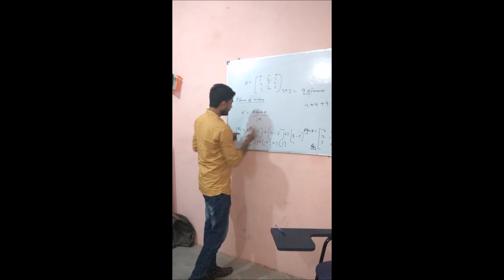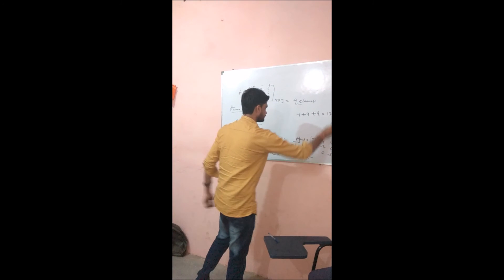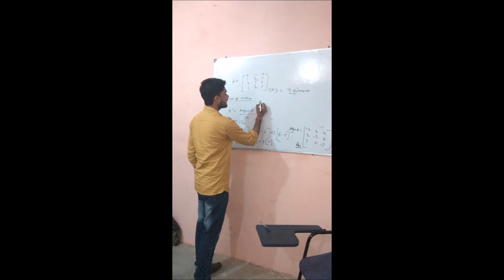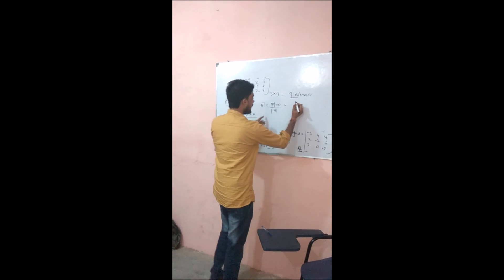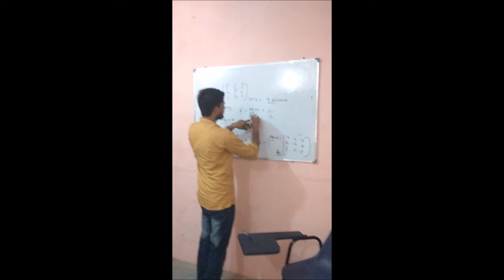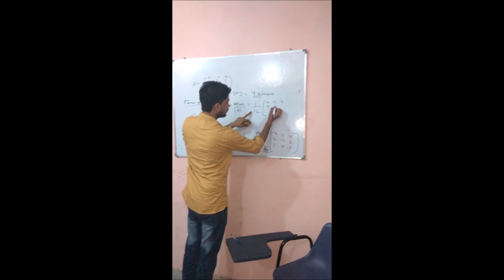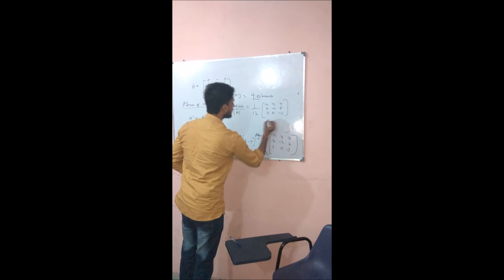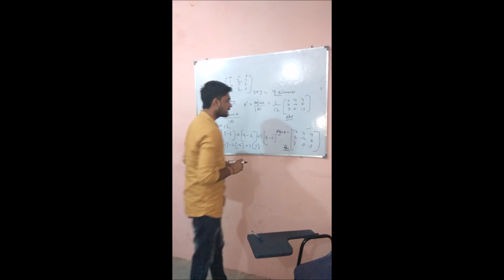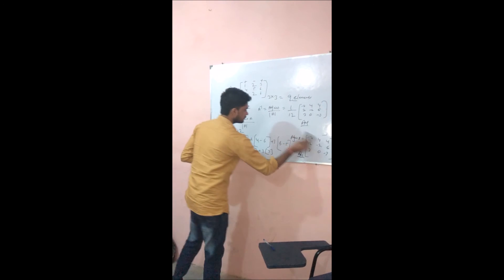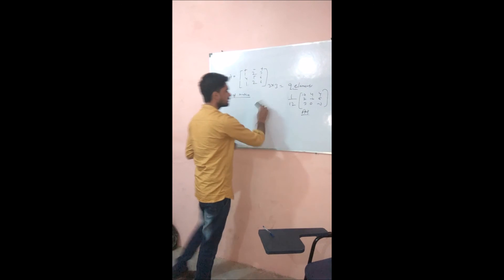Now we have the inverse to find. We have the formula: A inverse equals adjoint A upon determinant A. So we have the adjoint matrix and determinant 12. Adjoint A is: minus 7, 4, 4; 2, minus 2, 6; 3, 0, minus 3. This is the inverse — we divide each element by 12. Both methods are valid. This completes the topic of Determinants we are studying.